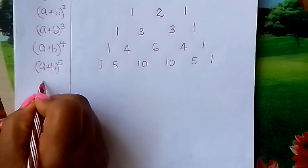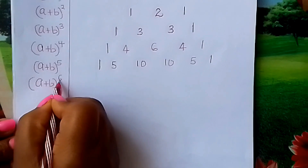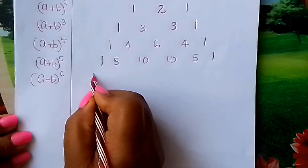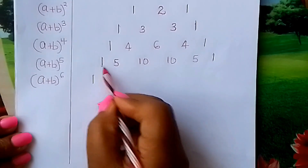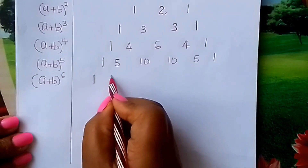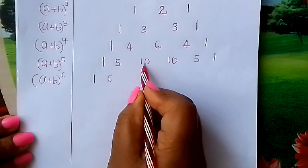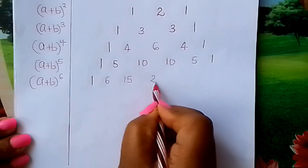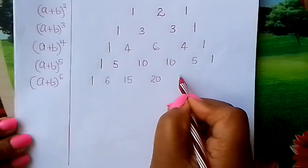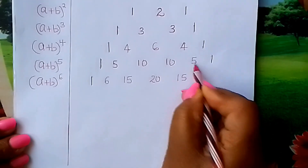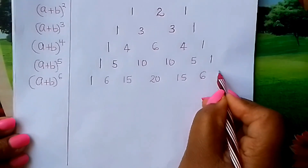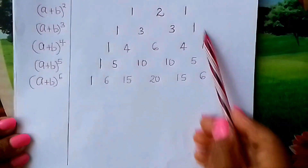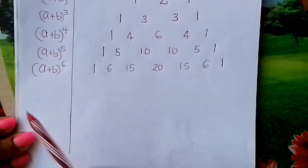We go to when the power is 6. I hope you can now move with me. You fix a 1 in a slanting manner. 1 plus 5 gives us 6. This plus this gives us 15. This plus this gives us 20. This plus this gives us 15. This plus this gives us 6. And finally, 1. Our triangle is becoming bigger and bigger — Pascal's triangle of coefficients.